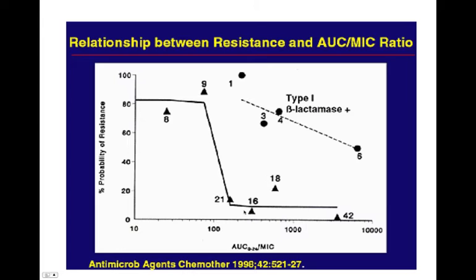It's important not only for eradication and survival to keep this AUC:MIC ratio high, but it's also important to try to maintain some effectiveness of the drug. Getting this magical area under the curve to MIC ratio above 100 is important to resist the development of resistance, as you can see here.